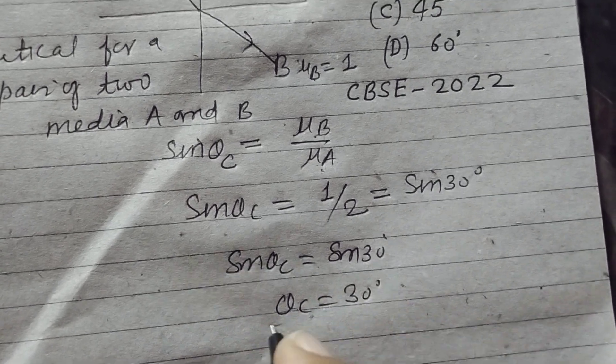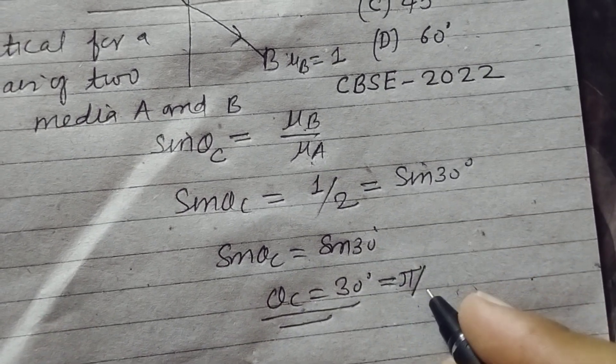Therefore, theta C equals 30 degrees or pi by 6 radians.